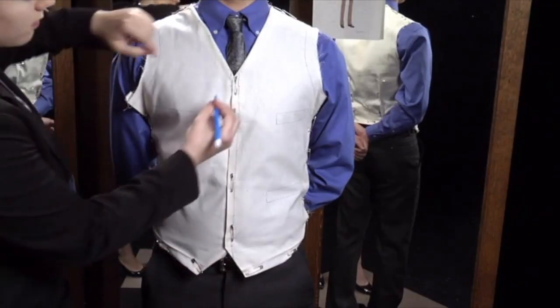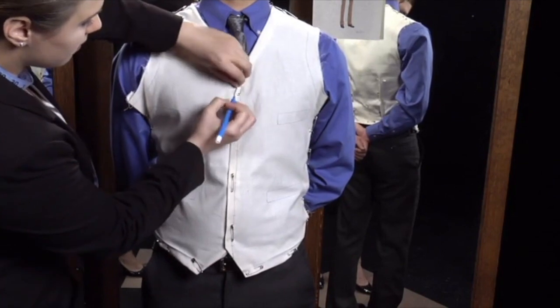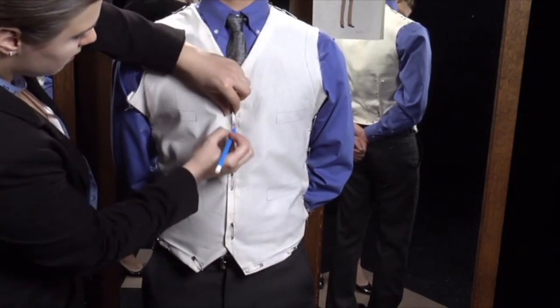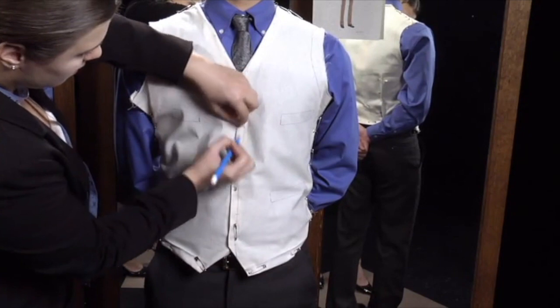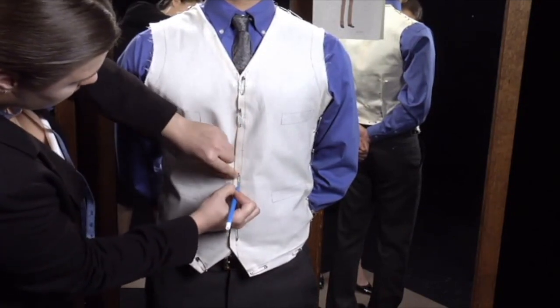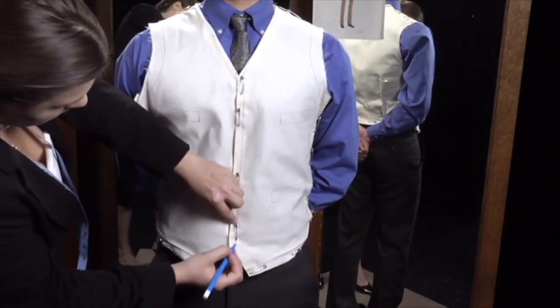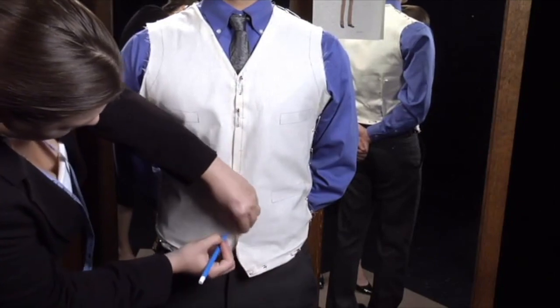Use your water-soluble marker to mark both sides of each pin. Double check that all pins are marked on each pattern piece before removing them. Once you've ironed the vest pieces flat again, use these points to even the seams out from side to side and front to back.